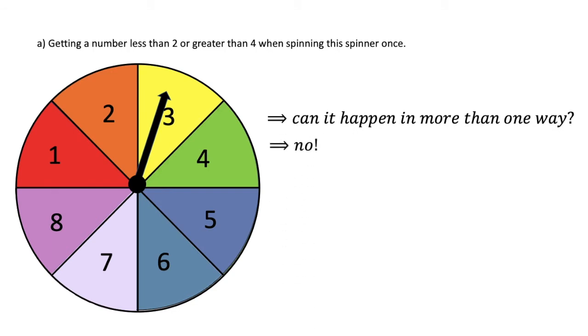If we spin the spinner and it lands on 5, 5 is not less than 2 but it is greater than 4. And no matter what number we get, we will never get a number that is both less than 2 and greater than 4. And so this can happen in only one way.